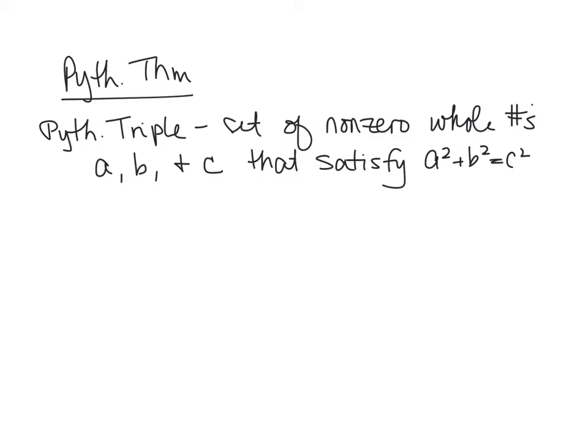When we're dealing with the Pythagorean Theorem, we have something called a Pythagorean Triple. The Pythagorean Triple is a set of non-zero whole numbers A, B, and C that satisfy the equation A squared plus B squared equals C squared.